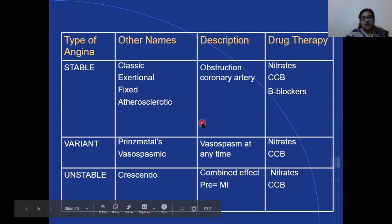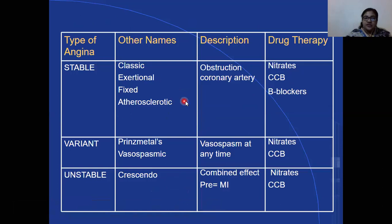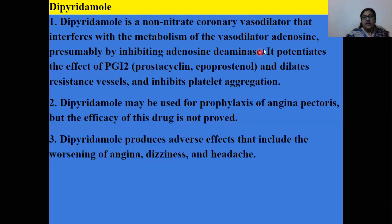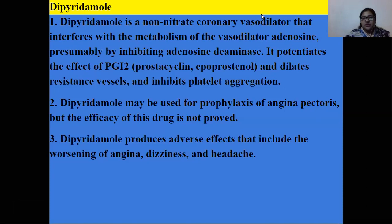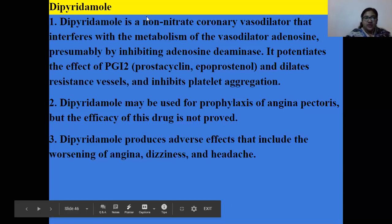Triple drug therapy — co-administering nitrates, calcium channel blockers, and beta blockers — is useful in patients with exertional angina not controlled by two anti-anginal agents. In this combination, nifedipine decreases afterload, nitrates decrease preload, and beta blockers reduce heart rate and myocardial contractility. A summary table has been prepared to clarify which medicines to give in which clinical situation.